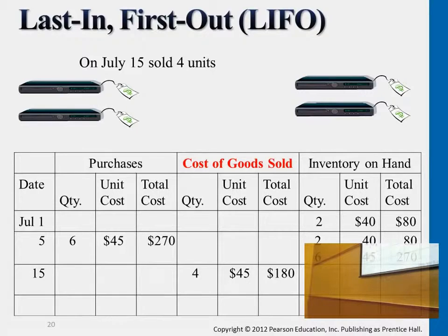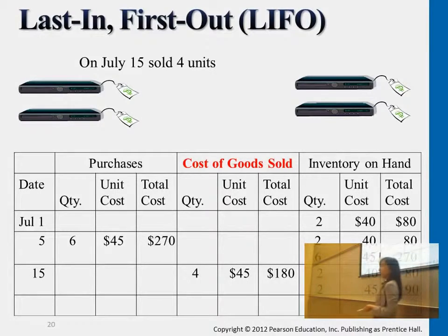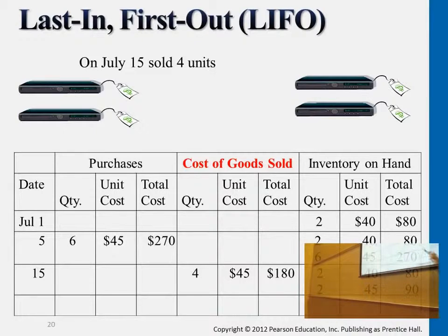Therefore, ending inventory would have two units from the older purchase transaction at $40, and then two at $45. We start from two at $40, purchase in six at $45, and when we start selling four DVD sets we choose from the latest batch to assign the cost at $45. So cost of goods sold is four at $45, and ending inventory is two from the earlier batch and two from the latest batch.